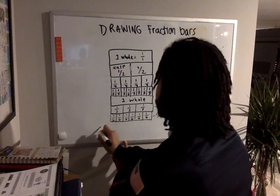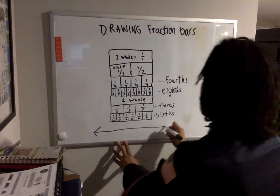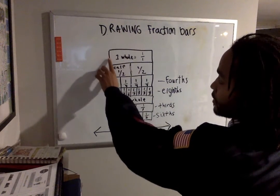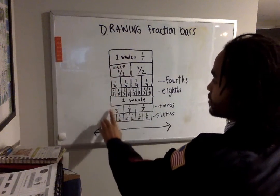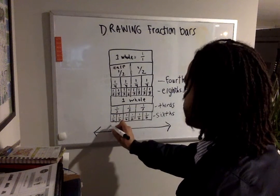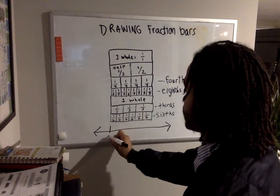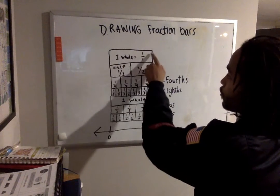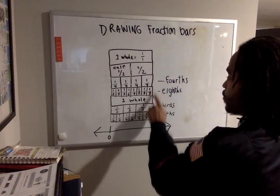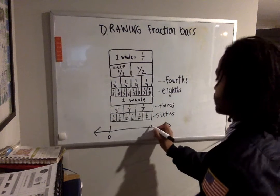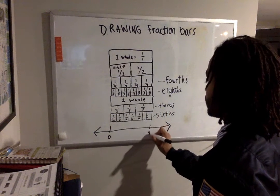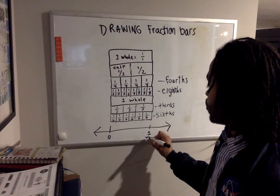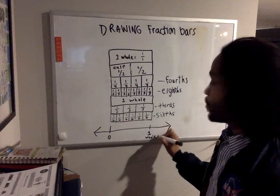Right under my fraction bar, I'm gonna draw a number line. Give myself some space and right where this fraction bar begins, I'm just gonna come down and draw a line and write the number zero. Right where the one whole ends, which should be the end of all these fractions, is where I'm gonna write the number one. But that's not it. I'm gonna write one whole. This is very important. One whole.